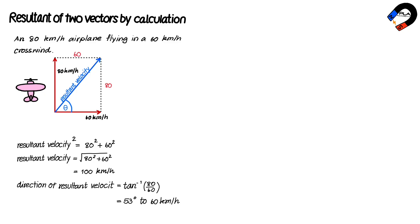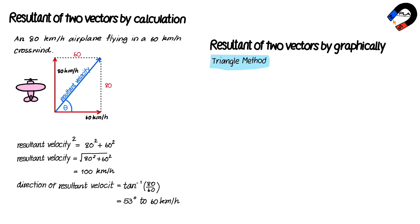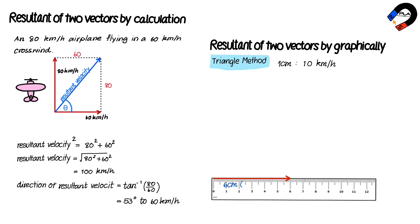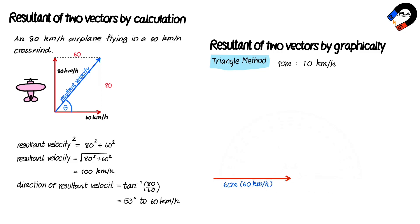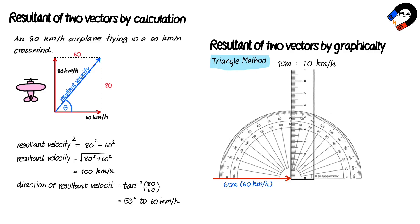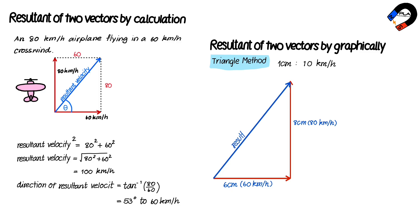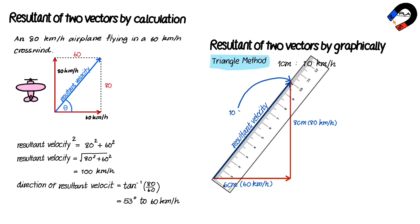To find the resultant velocity using the triangle method graphically: set the scale as 1 centimeter to 10 kilometers per hour. Draw the velocity of 60 kilometers per hour to the right for 6 centimeters. Using a protractor, measure an angle of 90 degrees at the head of the 60 km/h vector and draw the velocity of 80 kilometers per hour for 8 centimeters. The resultant velocity is formed by connecting the tail of the 60 km/h velocity to the head of the 80 km/h velocity. Measure the length of the resultant.